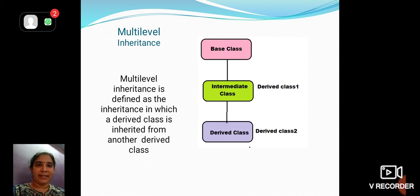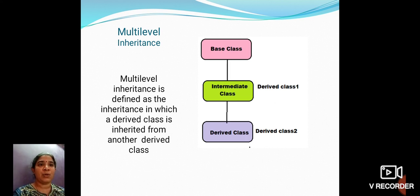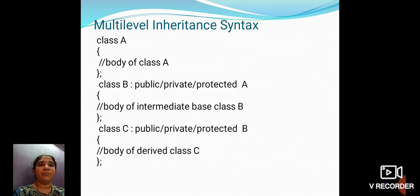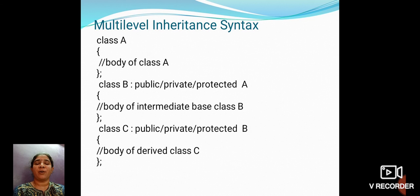Multi-level inheritance is defined as an inheritance in which a derived class is inherited from another derived class. Here, derived class 2 is derived from derived class 1, and this derived class 1 is called the intermediate class. In the general syntax, class B is the intermediate class derived from class A, and class C is derived from the intermediate class B.